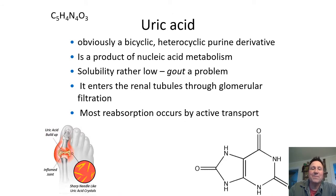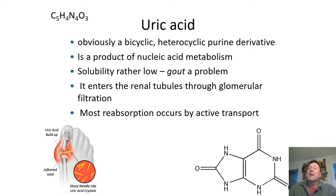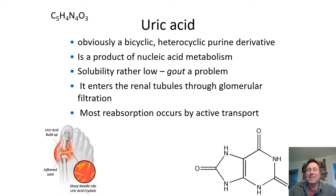Now uric acid — it's a bicyclic heterocyclic purine derivative. You get rid of four nitrogens with uric acid, which is much bigger. It's mainly a breakdown product of nucleic acids; a couple of the purines will break down and give you uric acid. It's found in our urine so it's obviously soluble in water, but much less soluble than urea or ammonia.